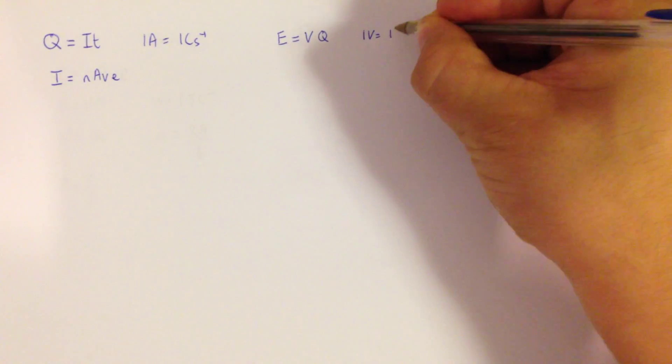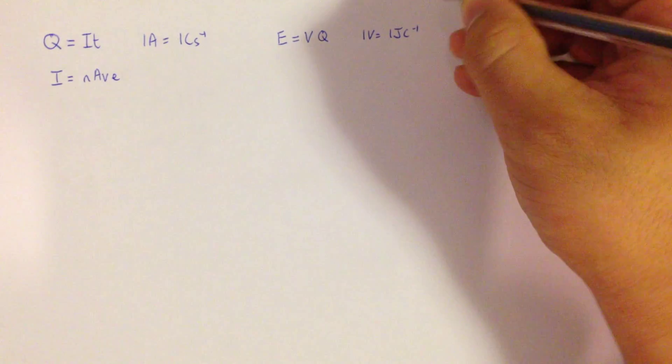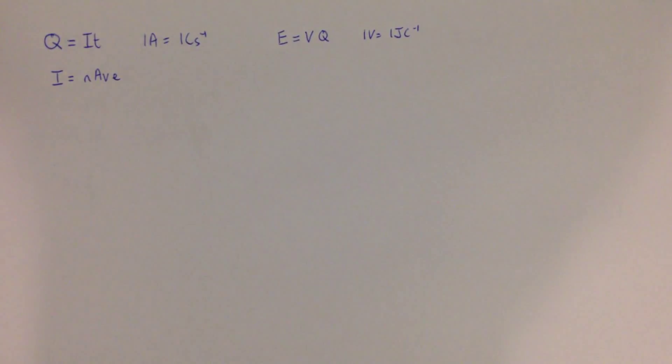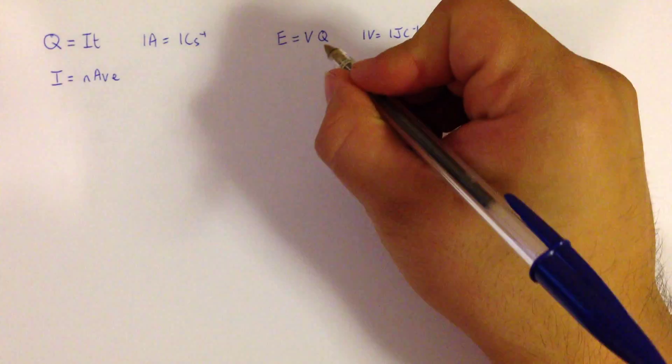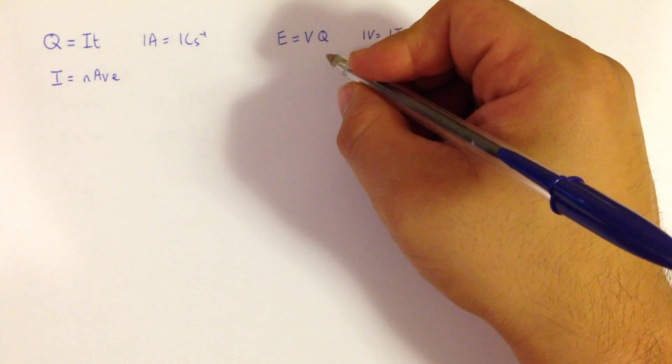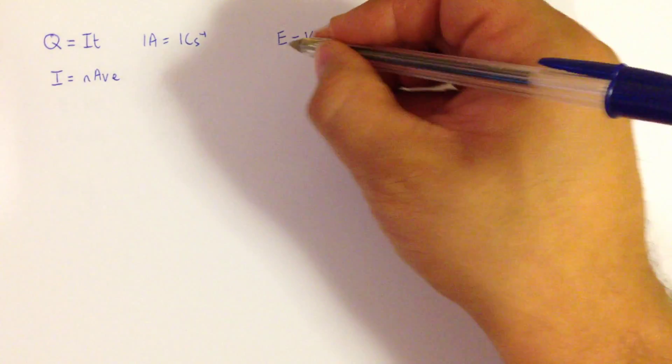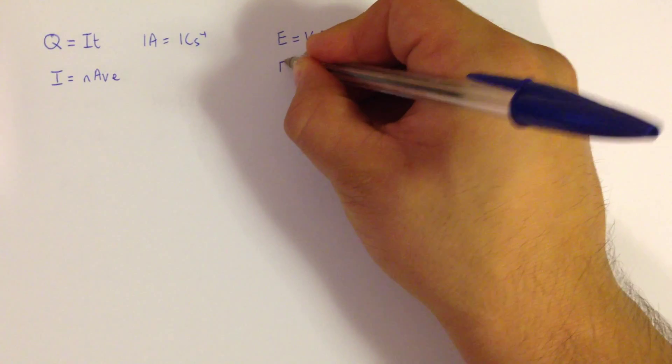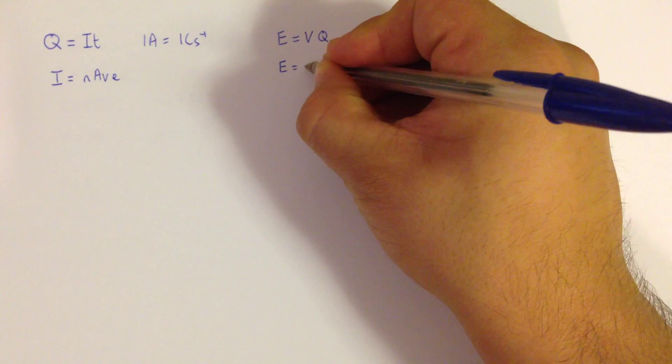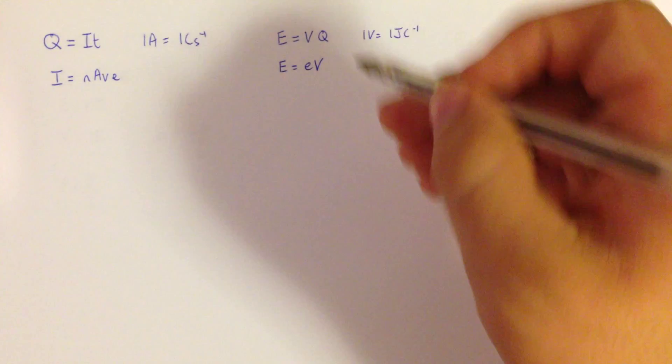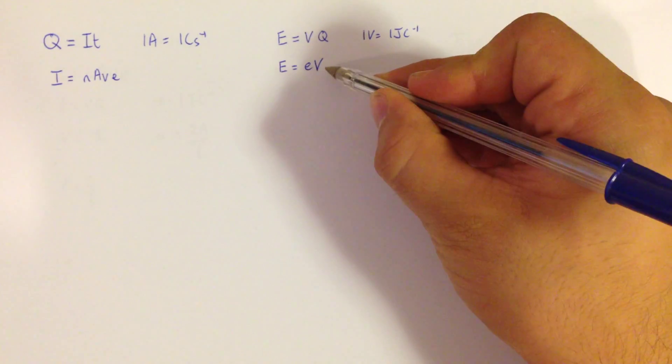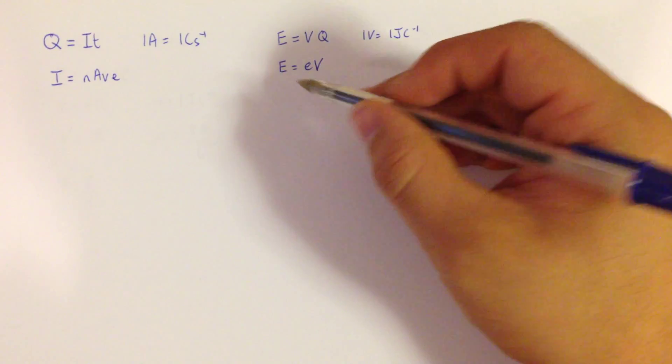So 1 volt is equal to 1 joule per coulomb. So we relate voltage to the energy and this equation also appears in quantum physics in a slightly different form where the charge is a specific charge, it's the charge on an electron. So if I know the potential difference through which any electron is accelerated, I automatically know its energy.